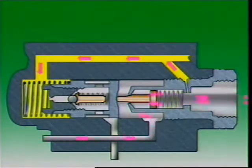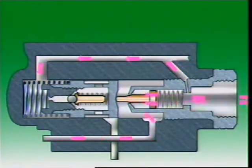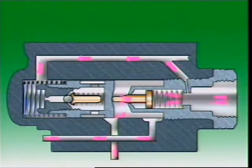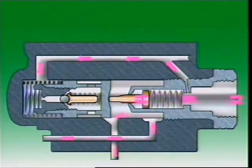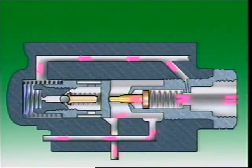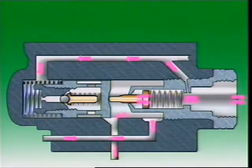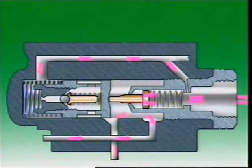The lower pressure is transmitted to the spring end of the control valve. The valve moves and opens the return port back to the pump inlet. Movement of the control valve also controls the movement of the flow control needle in the outlet fitting. The needle closes in the orifice, and fluid flow to the steering gear reduces.